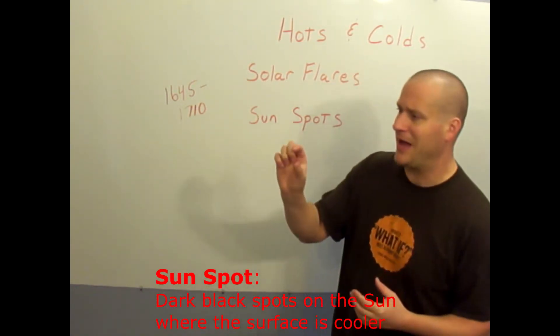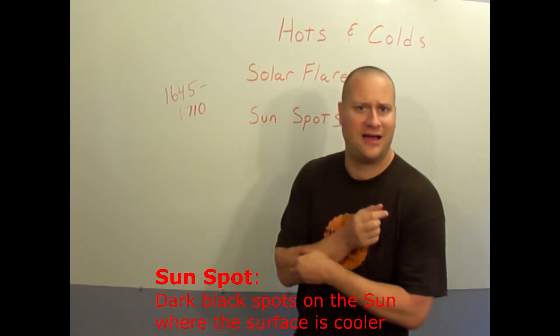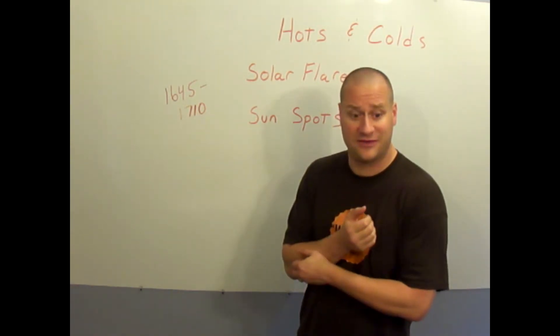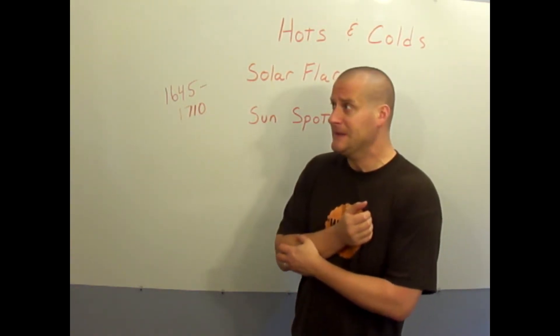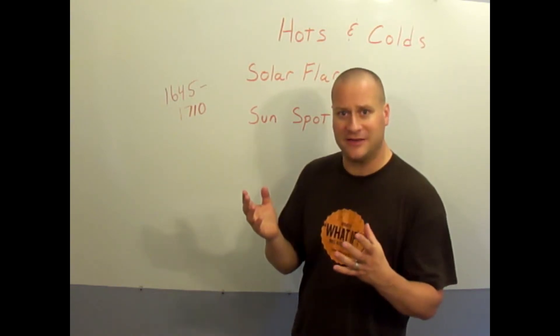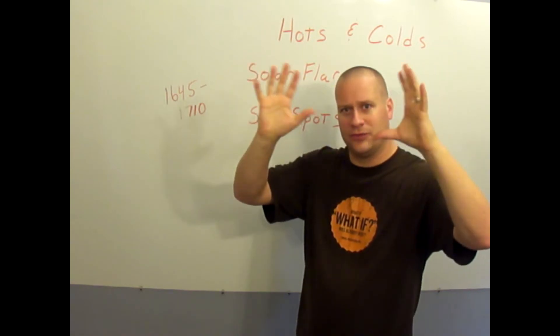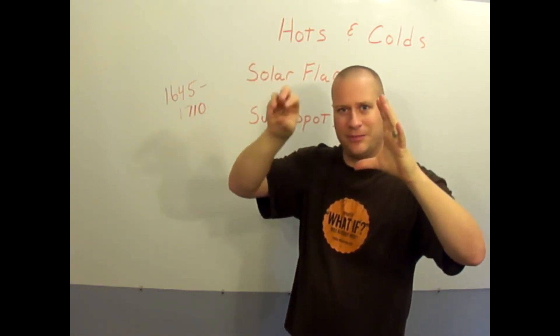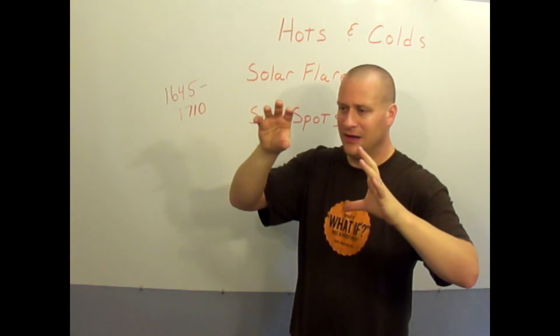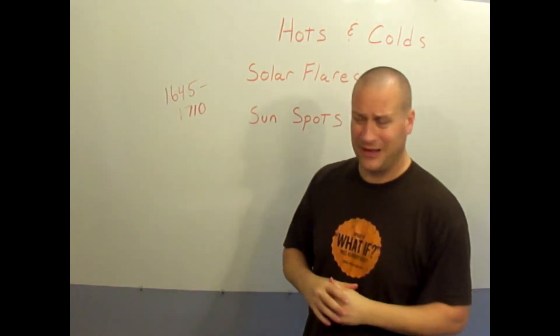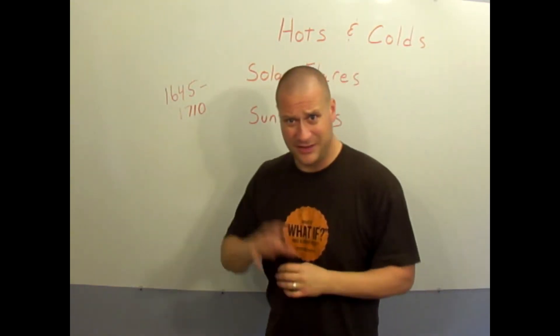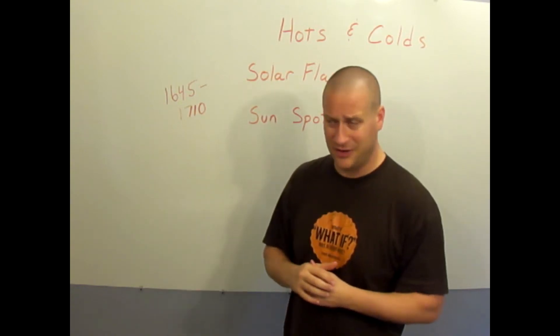They determine that these black spots, which are about 10 times the size of earth or can be about 10 times the size of earth on the sun, are actually cooler spots. If you think of like a volcano being big and orange and red and hot, when it's cool you might see black spots of hardened rock in the lava. Now I'm not saying that it's hardened on the sun, but the cooler spots stand out as darker.